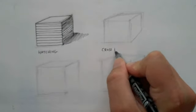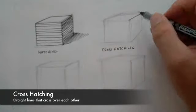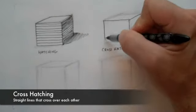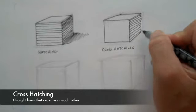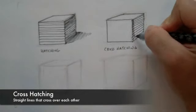Now the next technique we're going to talk about is crosshatching. Crosshatching starts out like hatching, but you may cross the lines over each other. And the more you cross the lines over each other, the darker the value gets.